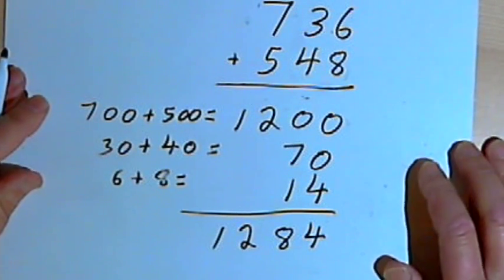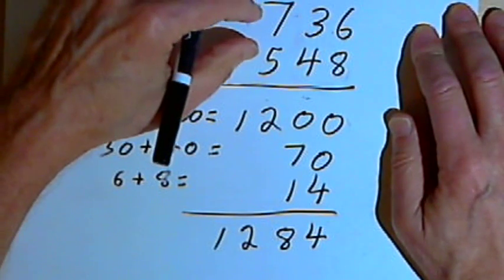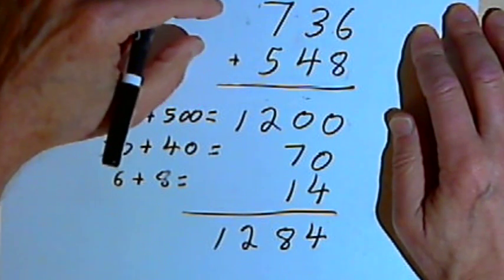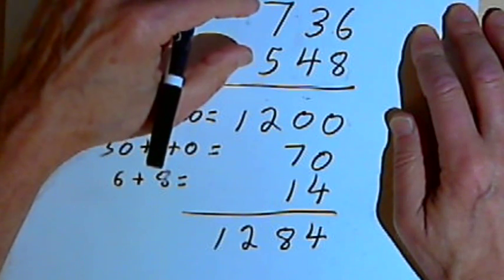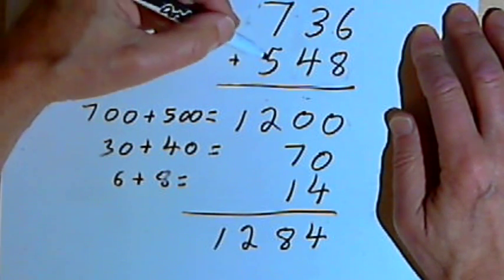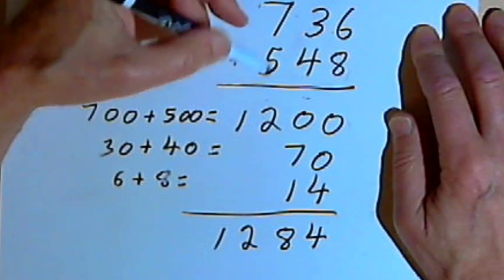So basically what I'm doing is I'm starting with my hundreds. If I had thousands, I'd start with the thousands. I'm starting with the biggest unit that I have. So I start with the hundreds in this case, add them together and get my 1,200.